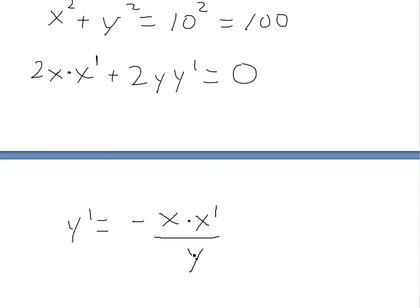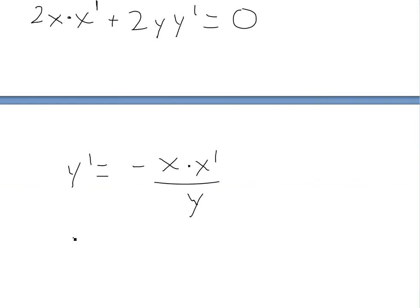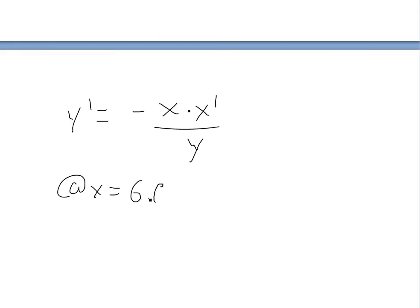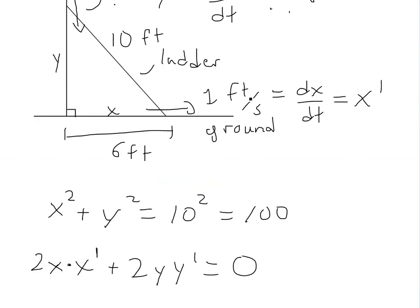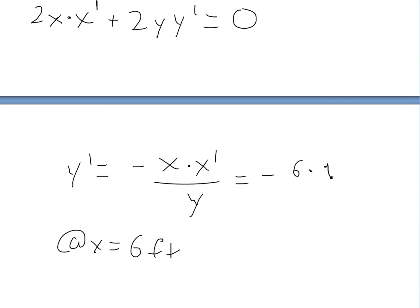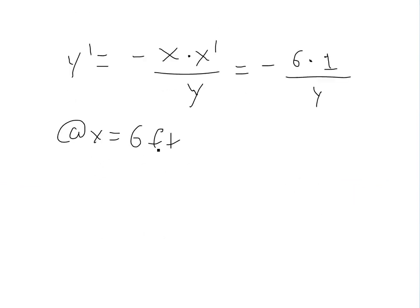So we know x, because we're looking for when x equals 6. So at x equals 6 feet, we get negative 6 times the rate as x is changing, it's 1 foot per second. So we'll put 1 right here, divided by y. So y at x equals 6, we got to find it out. And we can do that, just plug this into the Pythagorean theorem.